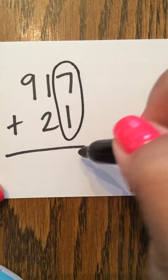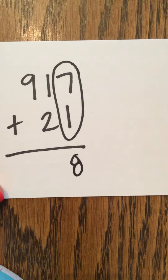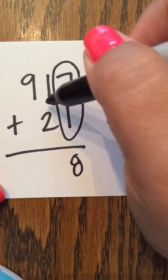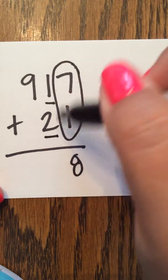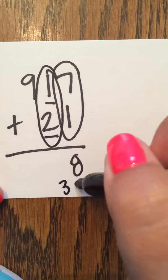7 plus 1 gives me 8. Remember, these numbers are in the tens column, so 10 plus 20. 10 plus 20 gives me 30.